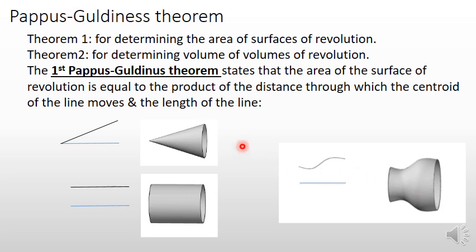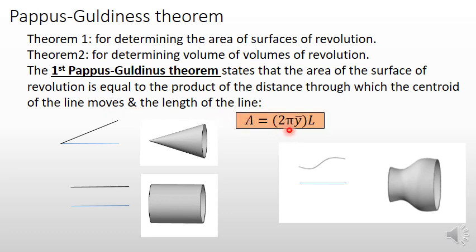The area of these surfaces can be determined using the first theorem of Pappus-Guldinus, which states that the area of the surface of revolution is equal to the product of the distance through which the centroid of the line moves and the length of the line. That is, A equals 2π·ȳ·L, where ȳ is the distance of the centroid of the line from the axis of rotation, and L is the length of the line which is rotated.